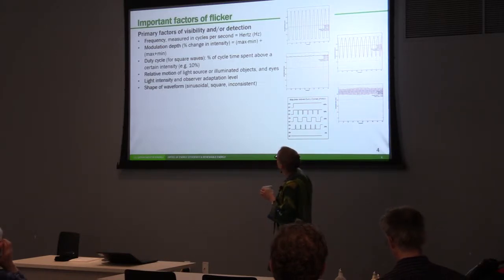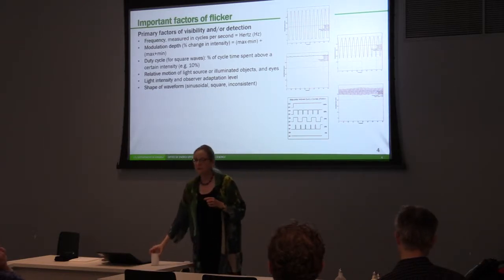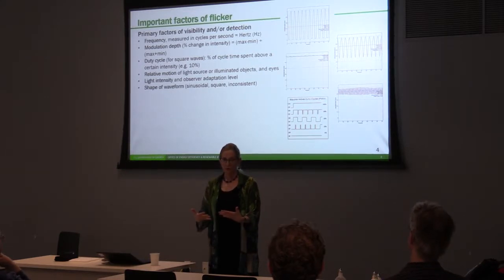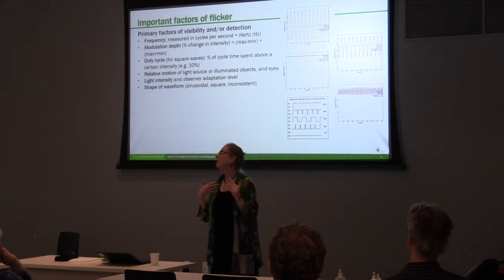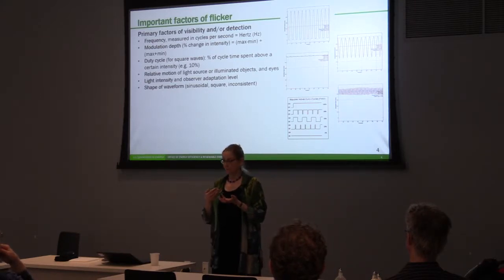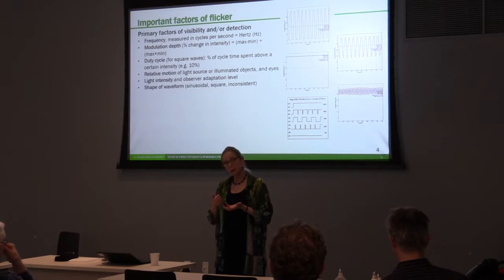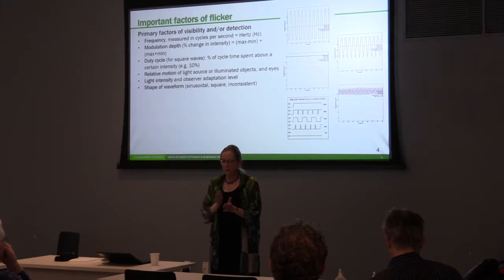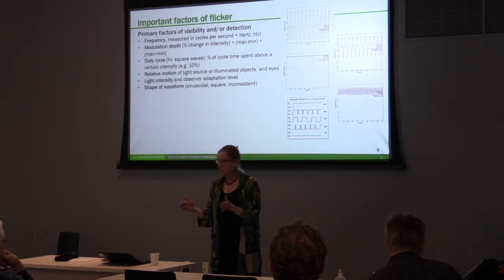That's not as noticeable as if you dim it down to 10% output. If the light source is only on 10% of the time, you're going to see that smaller percent of the light output as flicker more easily than if it's 90% of the time. Next, the relative motion of the light source relative to your eyes — if you're working on a steady task and your eyes aren't moving very much, you're probably not going to be picking up flicker as much.